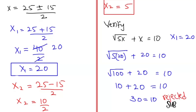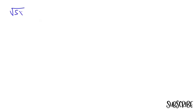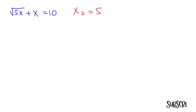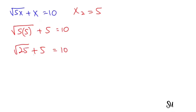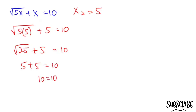Now I am going to verify x2. The equation is root(5x) plus x equals 10, and x2 equals 5. Plugging in: root(5 times 5) plus 5 equals root(25) plus 5 equals 5 plus 5 equals 10. So 10 equals 10 — the x2 value is absolutely correct.